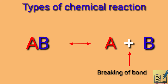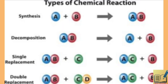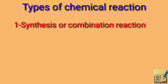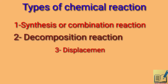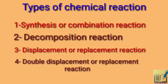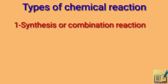Types of chemical reactions: the first one is synthesis or combination reactions, the second is decomposition reactions, the third is single displacement or replacement reactions, and the fourth is double displacement or replacement reactions. Now we start the first one — synthesis or combination reaction.